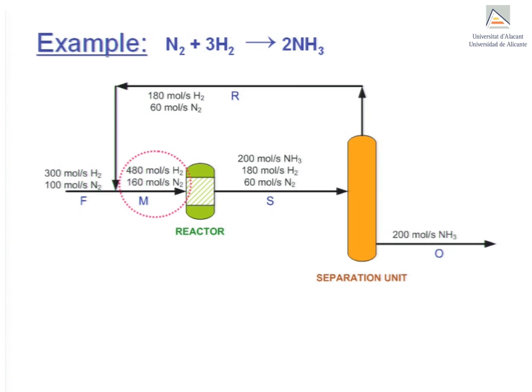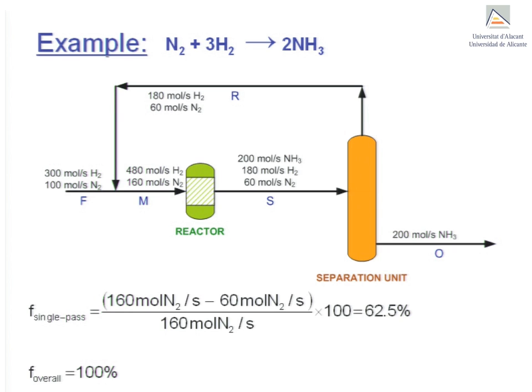Stream R is combined with stream F to give stream M, which necessarily must contain nitrogen and hydrogen in stoichiometric proportion. The system can operate like this indefinitely. The single pass conversion is 62.5%, which has been calculated from the moles consumed in the reactor and the amount fed to it.